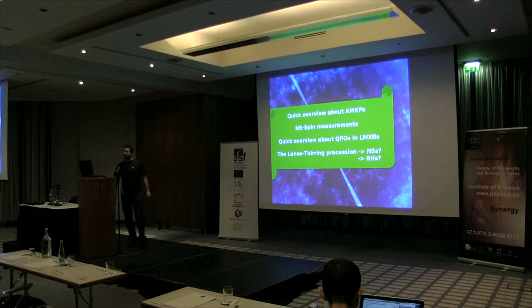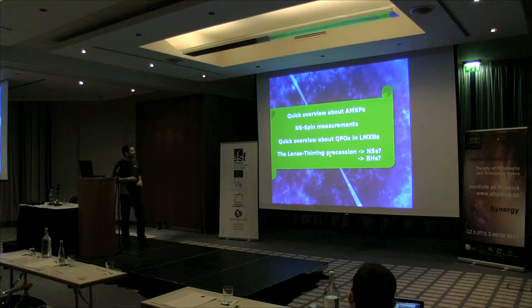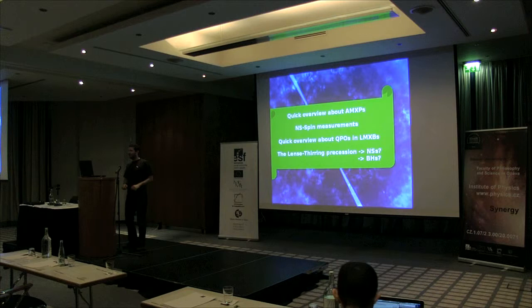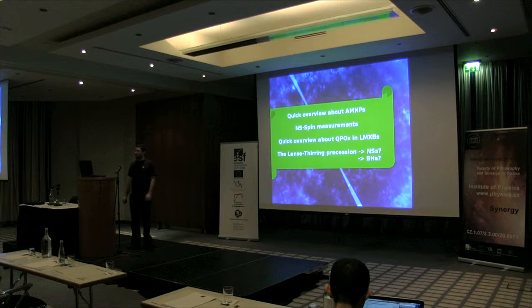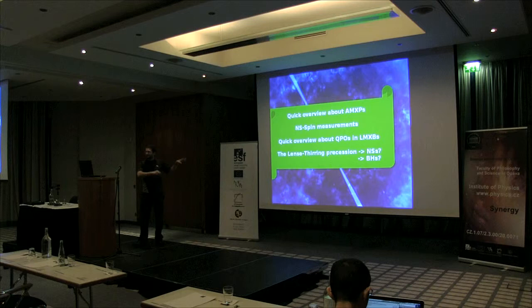What I really want to talk about is Lense-Thirring precession and whether we can detect it in neutron stars or black holes. But to do that I have to talk about QPOs — quasi-periodic oscillations — and to do that I need to talk about how we measure spin in these objects, so I have to review what AMXPs are: the accreting millisecond X-ray pulsars.